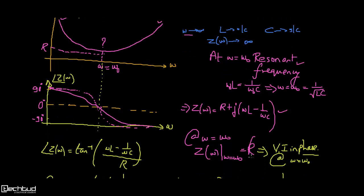The impedance in terms of phase is written as the inverse tangent of (ωL − 1/ωC) divided by R. This phase term shows the angle between V and I — voltage can lead or lag the current depending on the frequency of operation.